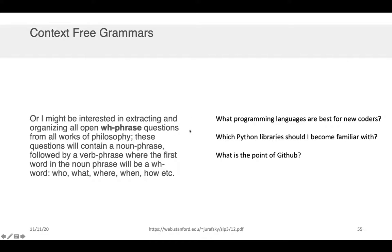And we could specify the correct structure in our context free grammar and be able to extract these from a very large and complicated text. We could extract all three of these questions: what programming languages are best for new coders, which Python libraries should I be familiar with, what is the point of GitHub.